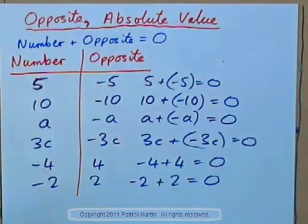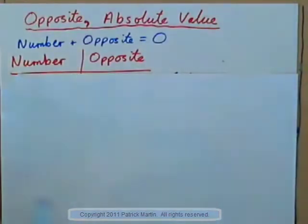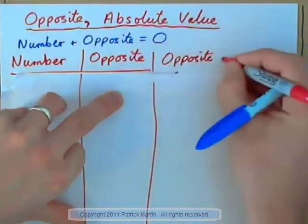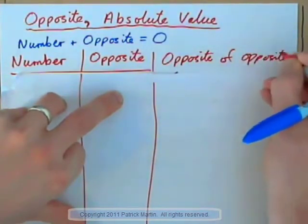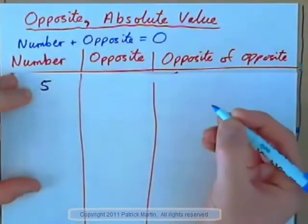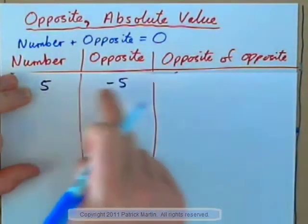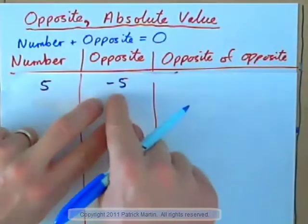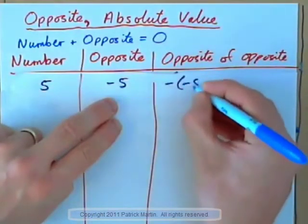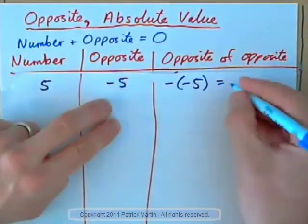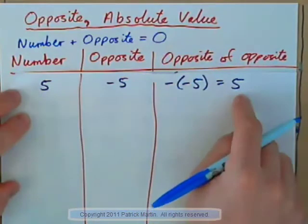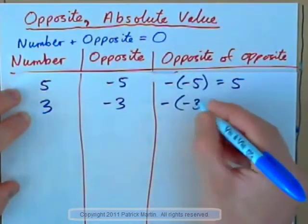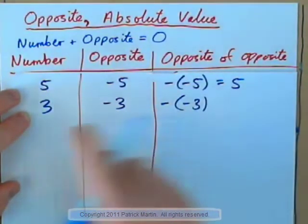Let's have a look at this. Say we had a table with number, opposite, and also the opposite of the opposite. If the number is 5, what added to 5 gives 0? Negative 5. So the opposite of 5 is negative 5. Now, the opposite of the opposite means the opposite of negative 5. So what added to negative 5 gives 0? Well, positive 5. So the opposite of the opposite of 5 is positive 5. If the number is 3, the opposite would be negative 3. The opposite of the opposite of 3, the opposite of negative 3, is of course positive 3.